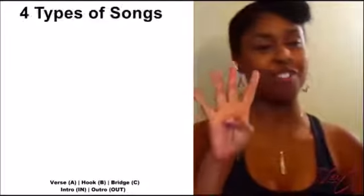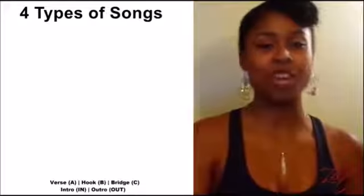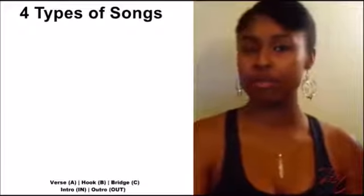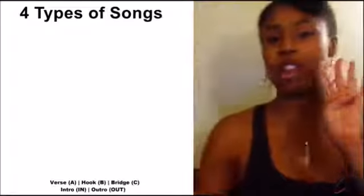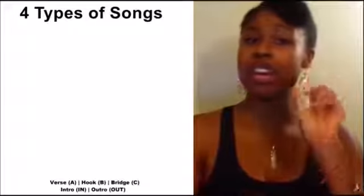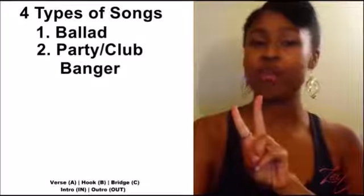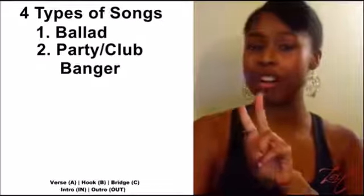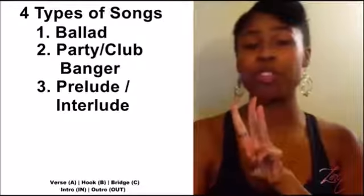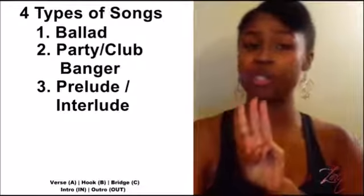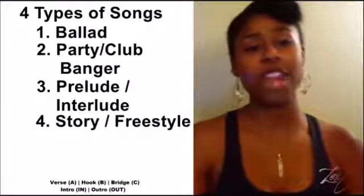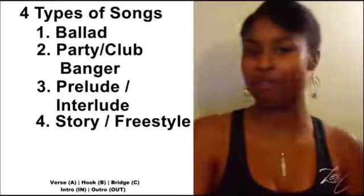Now that we've outlined what those things mean, I'm going to tell you four categories of songs and their typical structures. Those four categories are: number one, a ballad; number two, a party or club banger song; number three, a prelude or interlude; and number four, a story or freestyle format.